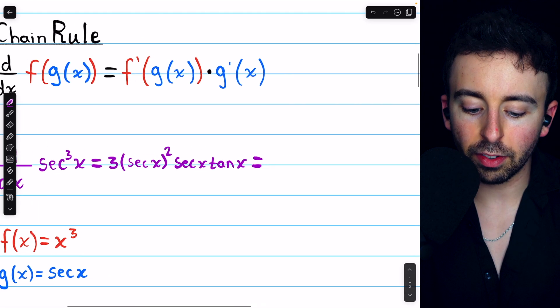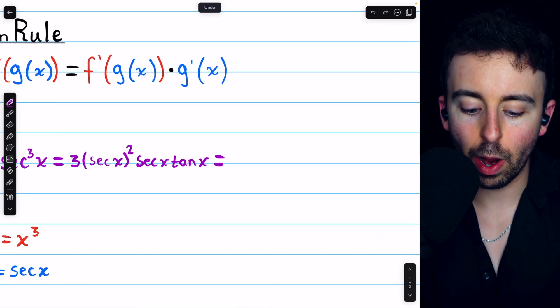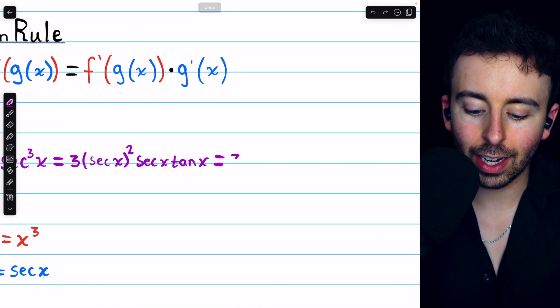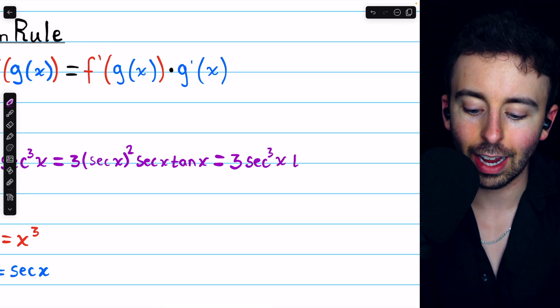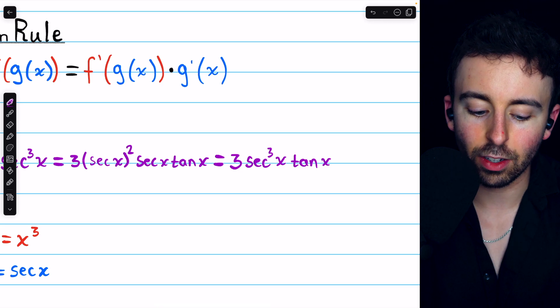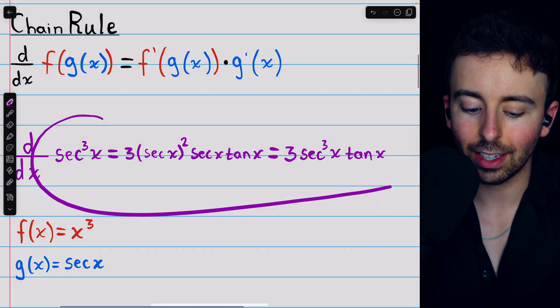Last thing we want to do is a bit of simplification. We have secant squared times secant, so final answer is 3 secant cubed x times tangent x, and that is the derivative of secant cubed.